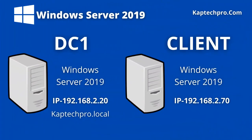For today's demonstration, we are using the DC1 machine. It has Windows Server 2019 installed. This is our domain controller. It has an IP address of 192.168.2.20. We have assigned a static IP to our domain controller and CapTechPro.local is the domain name.